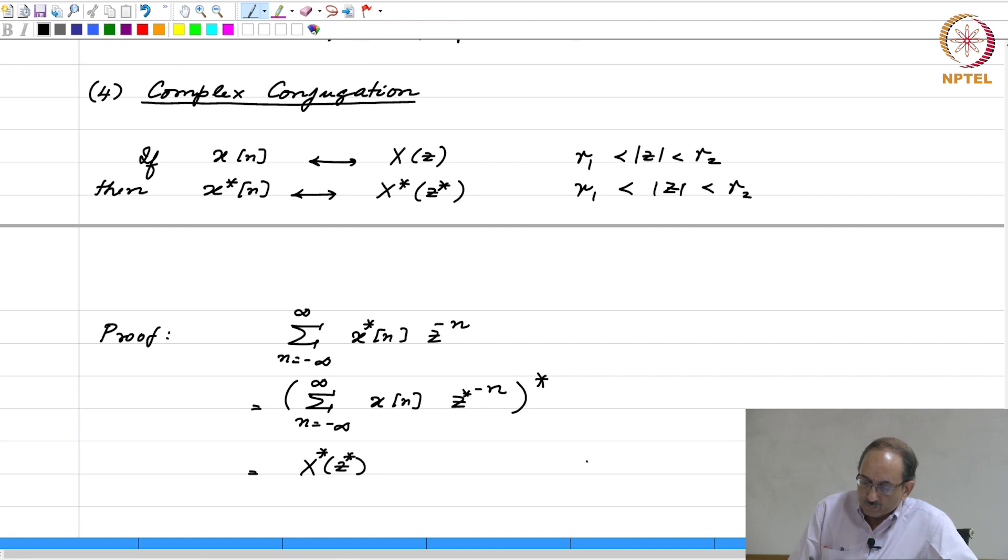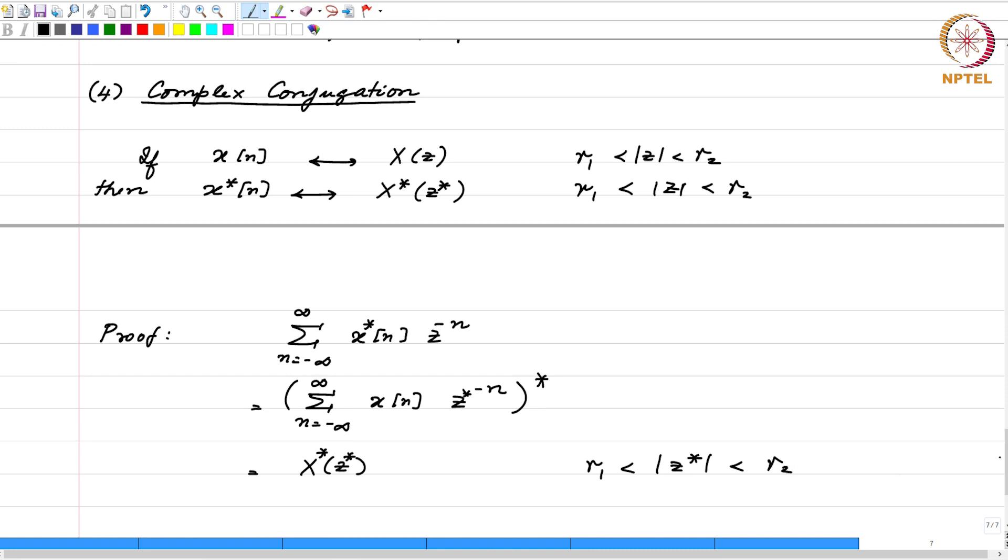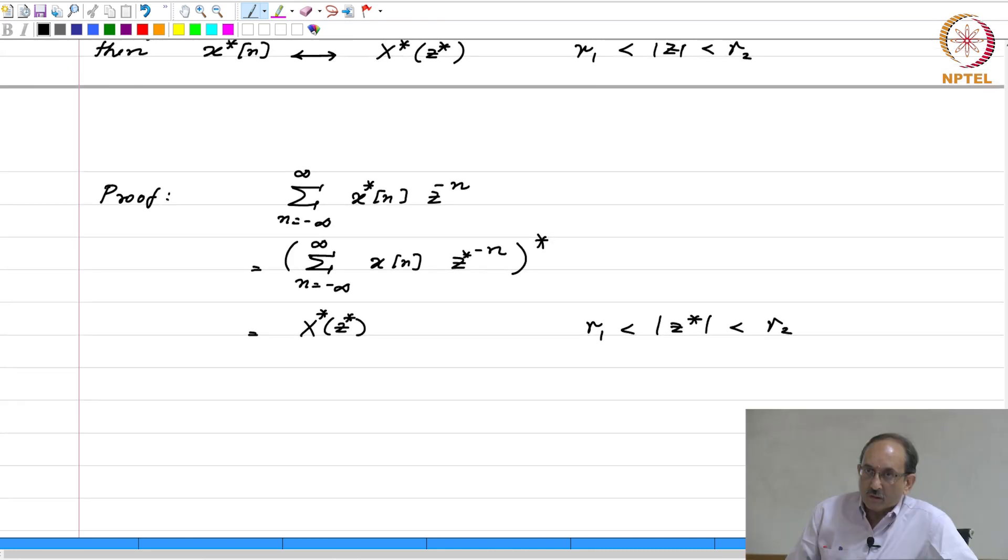And therefore, now you have z star must now belong to the region of convergence, which is nothing but this.